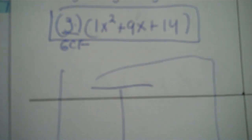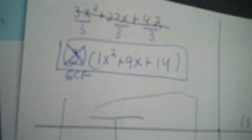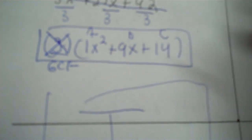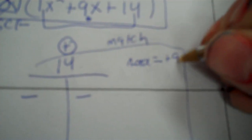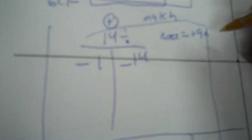On the T-chart, first cross out the GCF and the original problem, because this is where my ABC comes from. To find the top, take A times C: positive 1 times positive 14 is positive 14. For two numbers to multiply to a positive, the signs must match. It has to add to B, which is positive 9. 14 divided by 1 is 14 — adding gives negative 15, that's wrong. 14 divided by 2 is 7, and adding gives negative 9, so I switch both signs to positive to get positive 9.